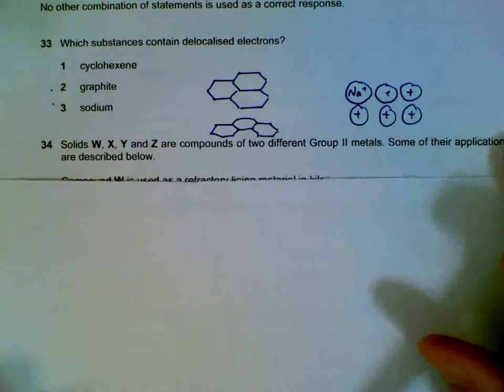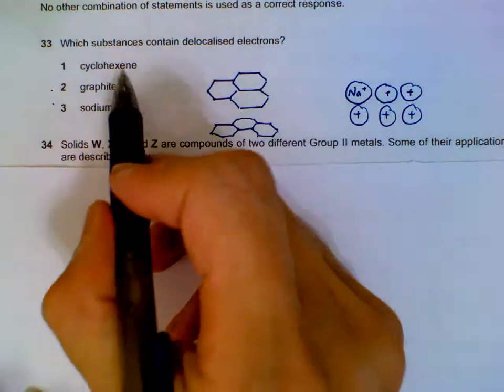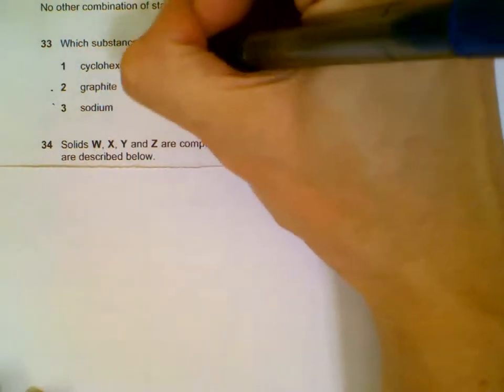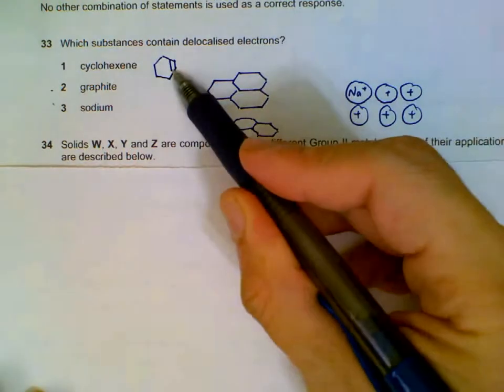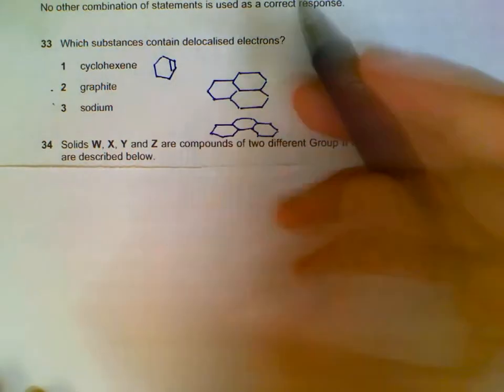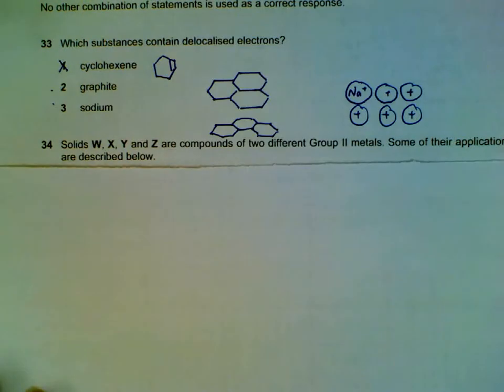Which substances contain delocalized electrons? Cyclohexene will be a double bond, right? These are not considered delocalized electrons, so statement 1 is wrong. 2 and 3 must be correct then.